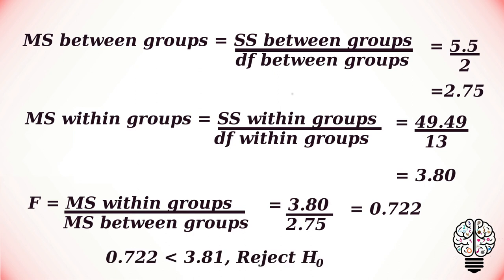As our F value is less than our F critical value, we reject null hypothesis and therefore state that there is difference between the mean of at least one group.